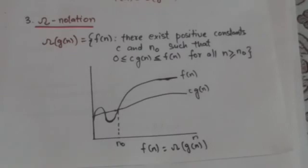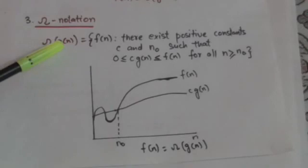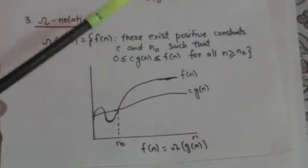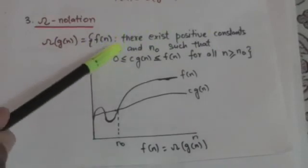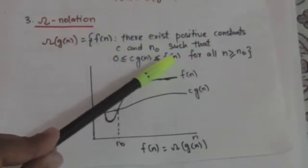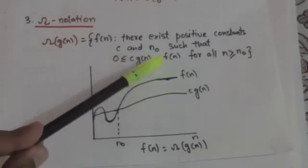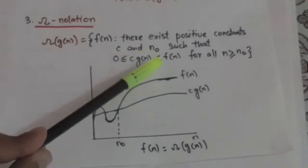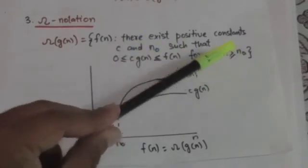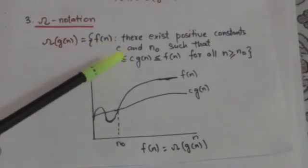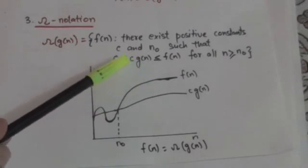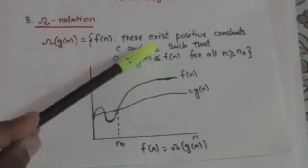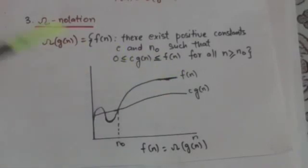The next notation is Big Omega notation. Big Omega notation provides an asymptotic lower bound. For a given function g(n), we denote Big Omega g(n) as the set of functions f(n) such that there exists positive constants c and n0, such that the value of f(n) is always greater than or equal to c·g(n) for all values of n greater than or equal to n0, and both c·g(n) and f(n) must be greater than or equal to zero.